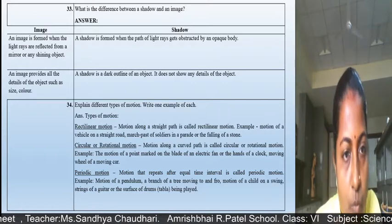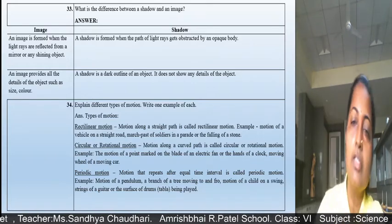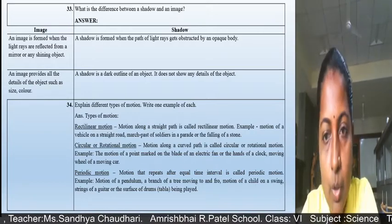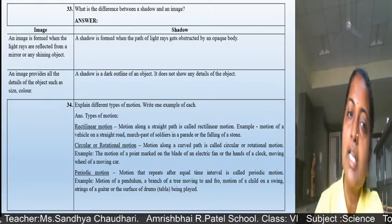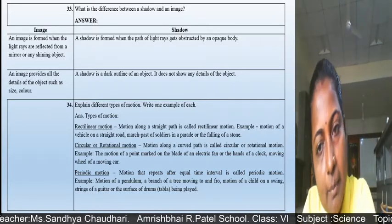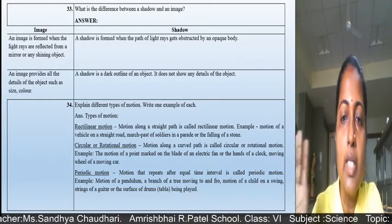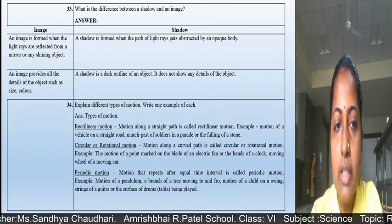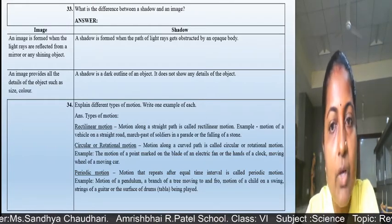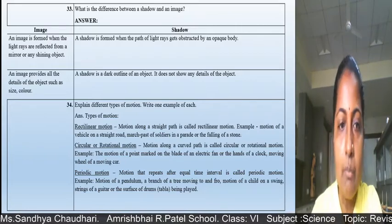For question 34, explain different types of motion with one example each — this is a three-mark question. Write both the definition and the example for each type. Many students write only the definition or only the example — you must write both. Any three types of motion for three marks: half mark for definition, half mark for example.